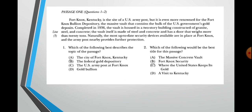Now we have an example for passage one: which of the following best describes the topic of the passage? The choices are: A, the city of Fort Knox, Kentucky; B, the federal gold depository; C, the US army post at Fort Knox; D, gold building. We read the first sentence of the one paragraph: 'Fort Knox, Kentucky is the site of a US army post, but it is even more renowned for the Fort Knox gold depository — the massive vault that contains the bulk of the US government's gold deposits.'